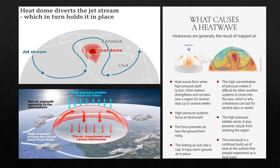Under this dome, the air sinks and compresses, releasing more heat. The jet stream traps the air in the area and pushes it towards the ground. The clouds are also blocked out, which further traps the heat inside the dome.